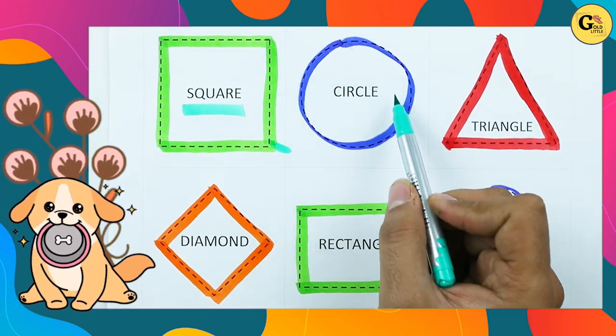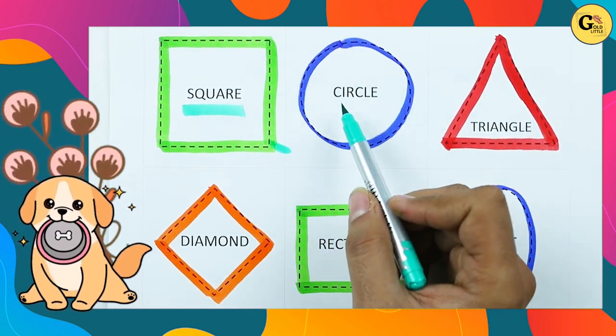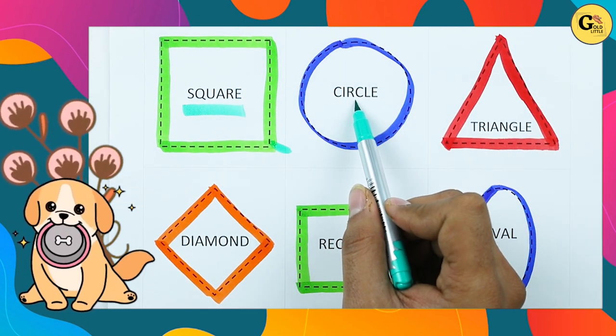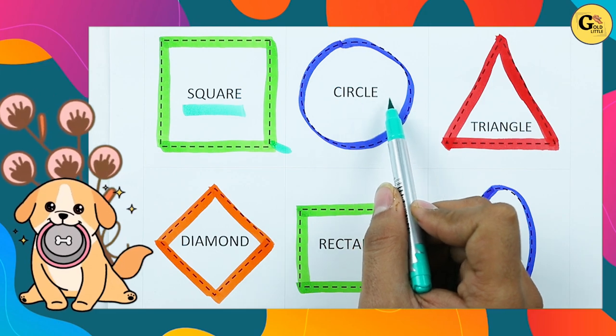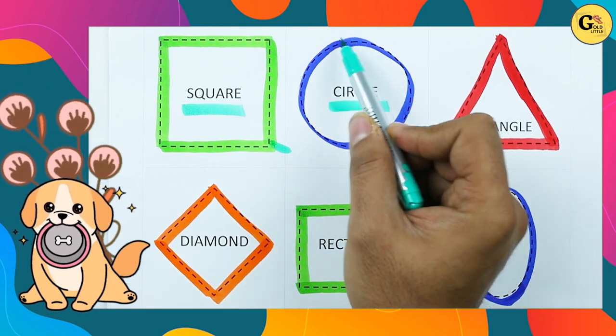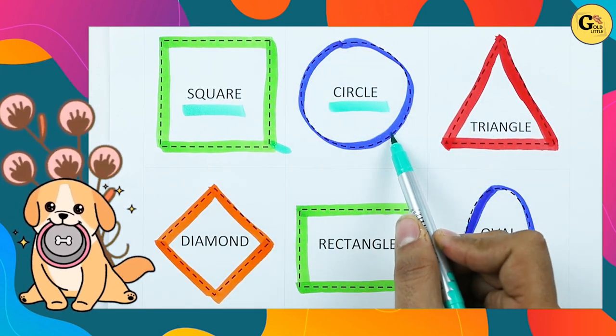Which shape is this? Circle. C-I-R-C-L-E. It's a circle with blue color.